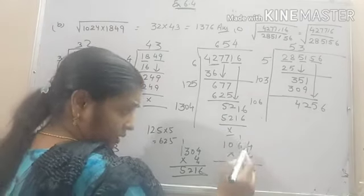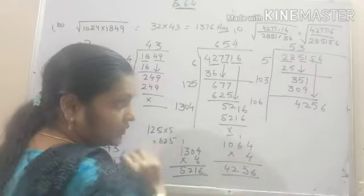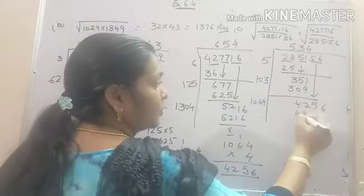24 plus 1, 25. 2 carry. 4 times 1 are 4. Yes. We get the exact term. It is 4 over here. 4256.